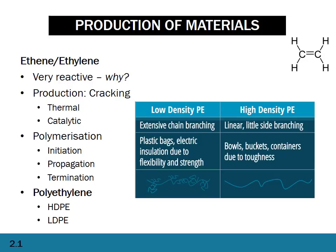There are two kinds of polyethylene: high density polyethylene and low density polyethylene. If you get a question on it, draw the pictures. High density polyethylene is very linear with no side branching, which means the different chains can get really close together. Low density polyethylene has a lot of side branching, making it harder for the strands to become compact. Low density is used for things like plastic bags and insulation; high density is used for things like bowls, buckets, and containers.